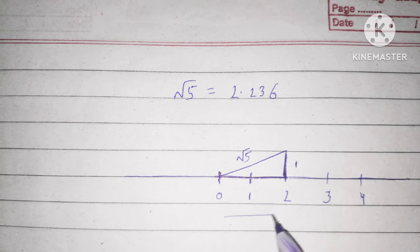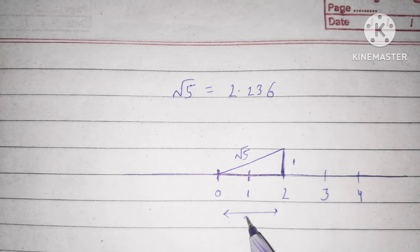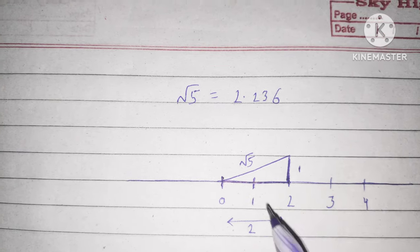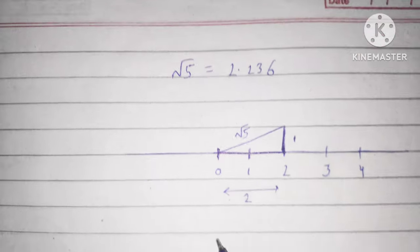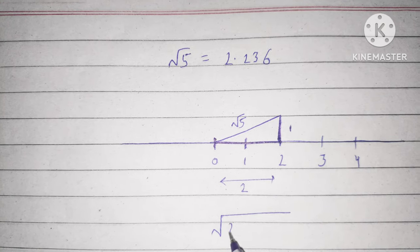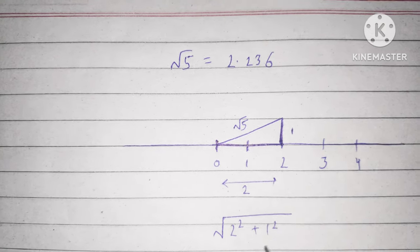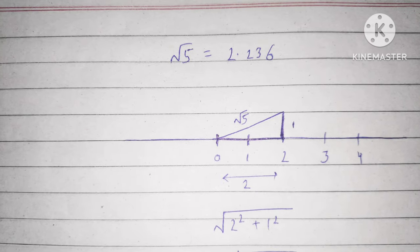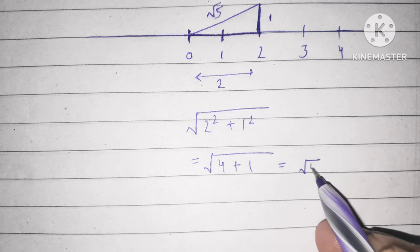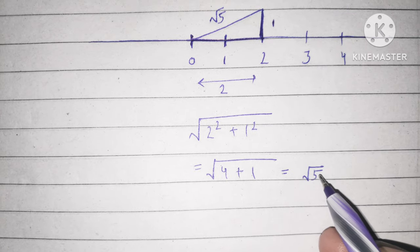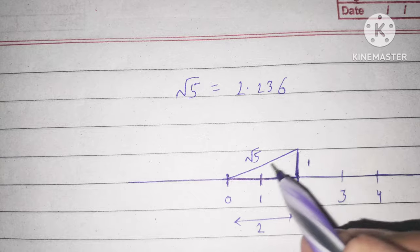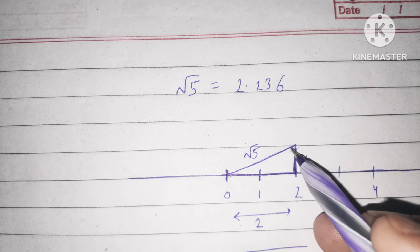The base is 2 and the perpendicular length is 1. So the hypotenuse equals the square root of base squared plus perpendicular squared. That is root of 2 squared plus 1 squared, which equals root of 4 plus 1, which equals root 5. So this hypotenuse is root 5.